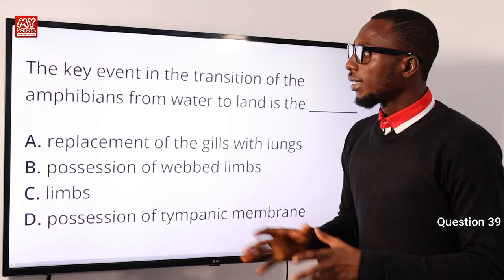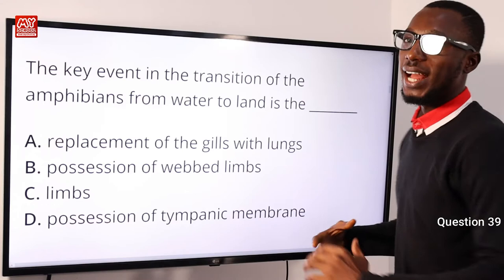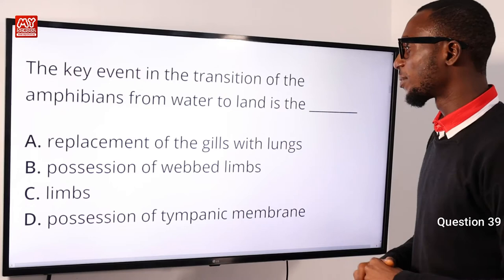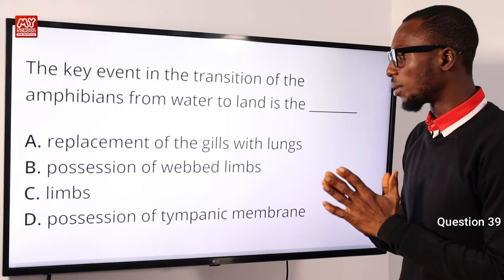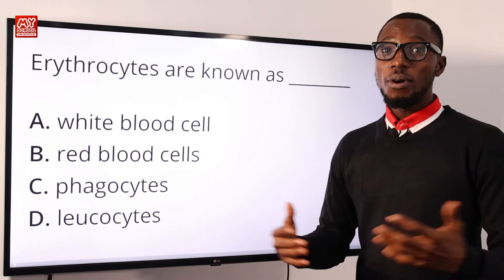Question 39: The key event in the transition of amphibians from water to land is what? While in water they breathe using the gills; moving up to the land they use their lungs to take up oxygen from the air. This implies that the replacement of gills with lungs is the key event, so option A is very correct.